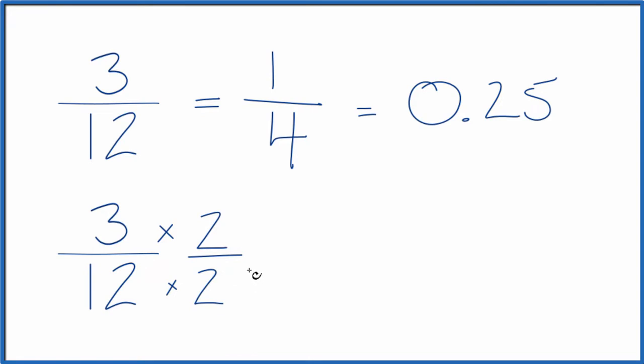2 divided by 2, it's just 1, and it doesn't change anything. But now, 3 times 2 is 6, 12 times 2 is 24, and 6 24ths, that's another equivalent fraction to 3 twelfths and 1 fourth.